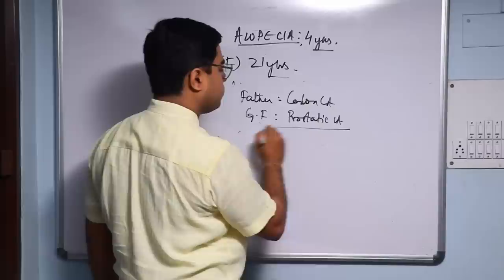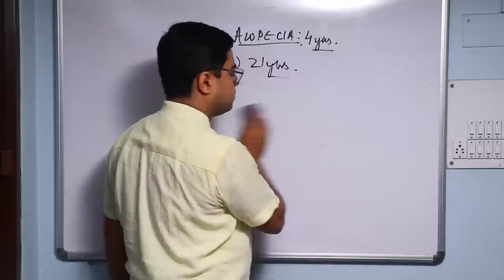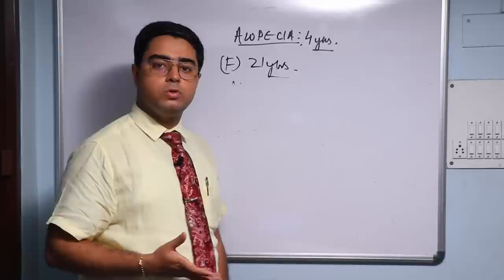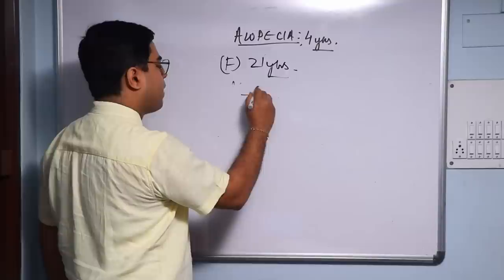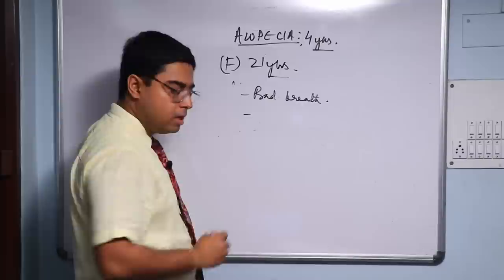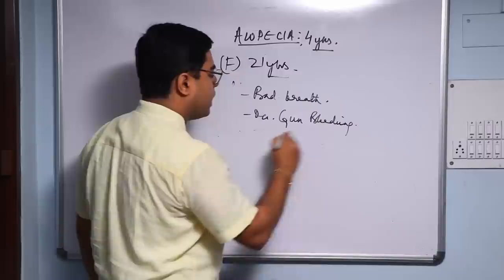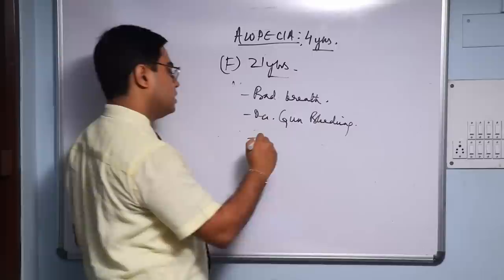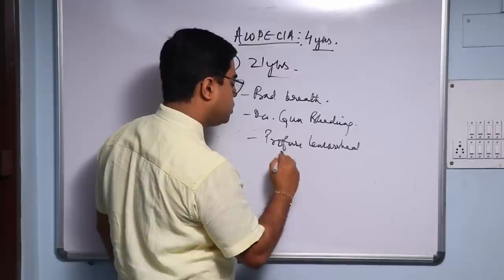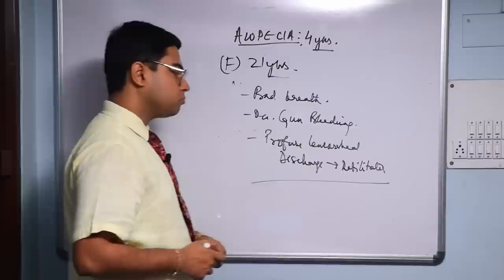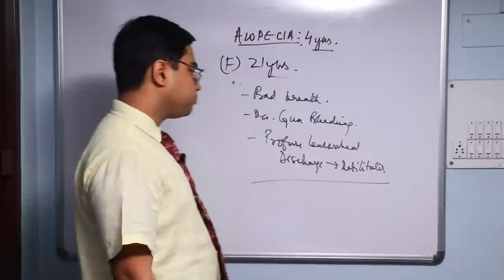If you do a head-to-foot assessment, I generally do this after going through the present complaints. There was some degree of bad breath - if you consider miasmatically, bad breath is syphilitic. There was occasional gum bleeding - any hemorrhage is tubercular. There was profuse leucorrheal discharge which debilitates the patient.